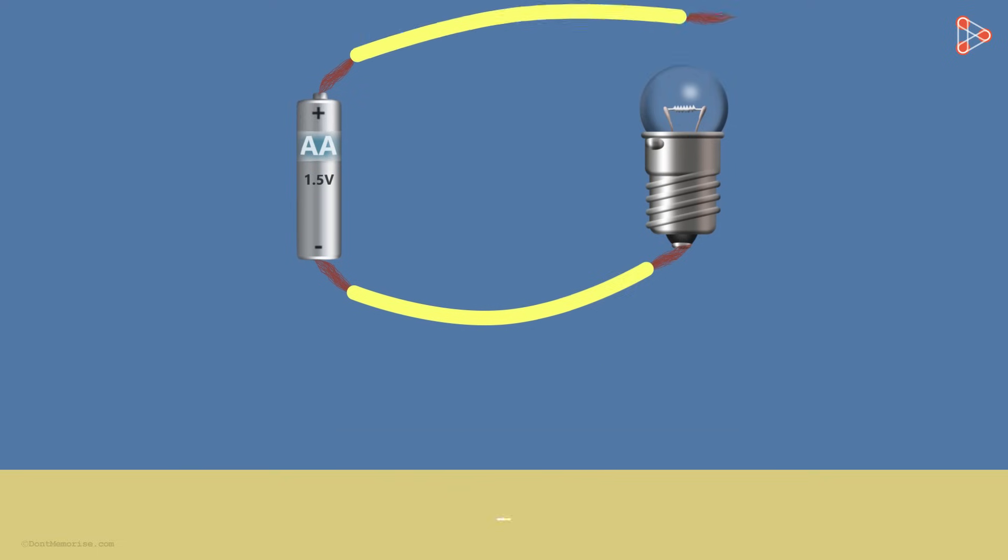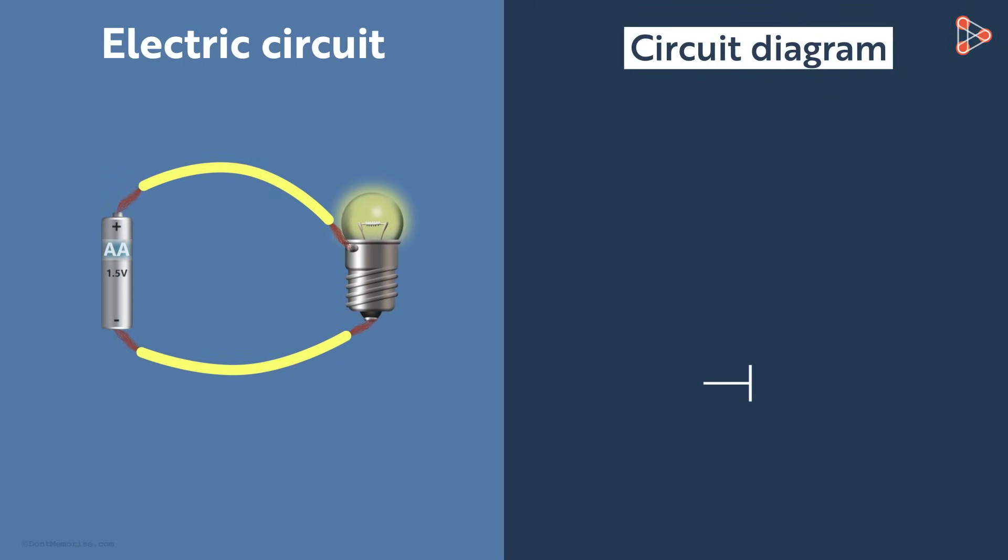So if we were to draw this simple circuit using the symbols, then how would we do it? Just draw the symbols for the electric cell and the bulb first. Then using straight lines for wires, join them together. This is the circuit diagram representing this circuit.